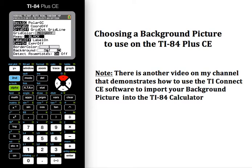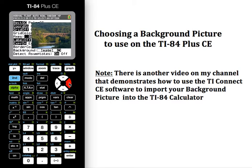Right now it was set to Off because, as you recall, the coordinate plane had a white background — basically no background picture, just white. As I begin to arrow to the right, I'm going to see some images, whatever has been stored in these image slots. When you buy the calculator, you will have a few images that are automatically stored in there, and then of course you can import over them.